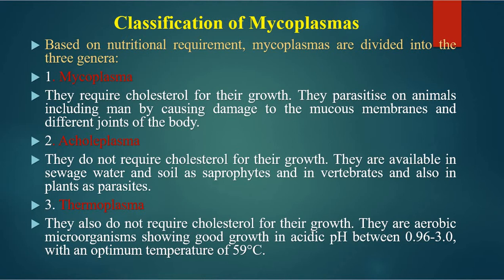The third group is Thermoplasma. They also do not require cholesterol for their growth. They are aerobic microorganisms showing good growth in acidic pH between 0.96 to 3, with an optimum temperature of 59 degrees centigrade.